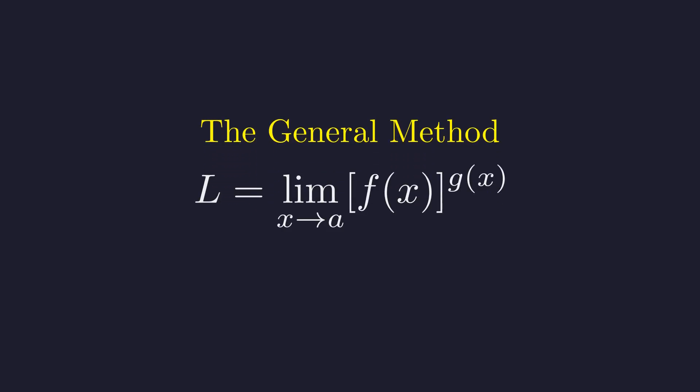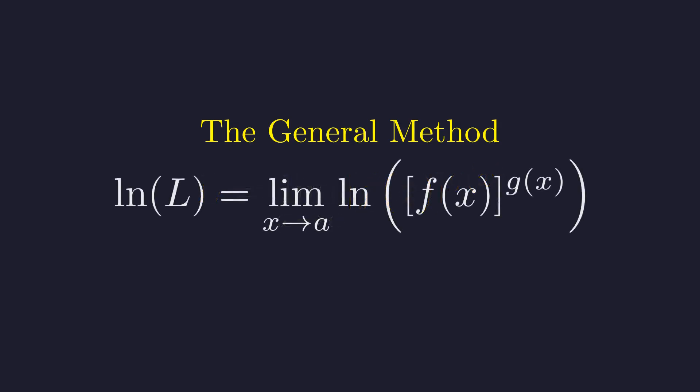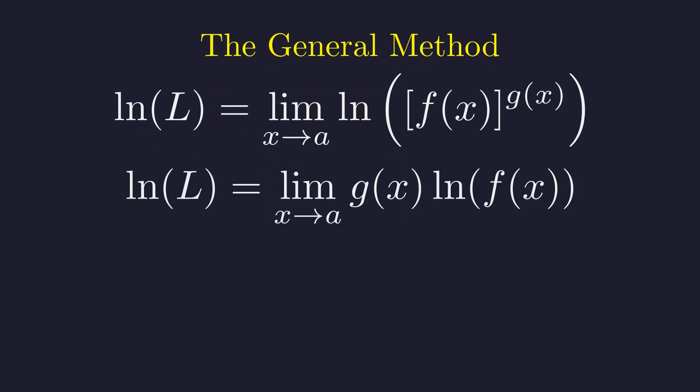Let's call the limit we're looking for, L. To handle the exponent, we'll take the natural logarithm of both sides. We take logarithms of both sides. This will let us work with the limit in a more manageable form. Applying the power rule, the exponent comes out front as a multiplier. This is the crucial transformation. We've converted the power into a product. Now g of x approaches infinity, while the natural log of f of x approaches zero. We have infinity times zero, which is another indeterminate form.